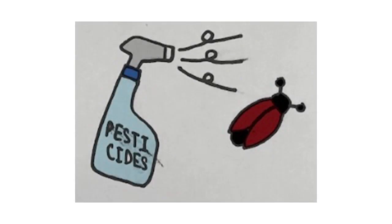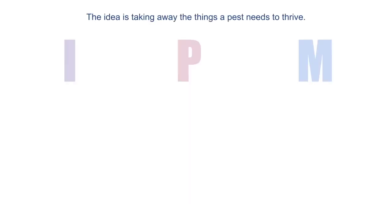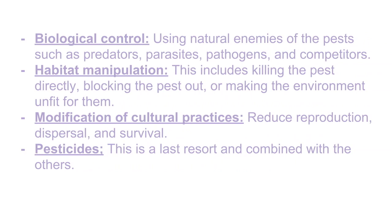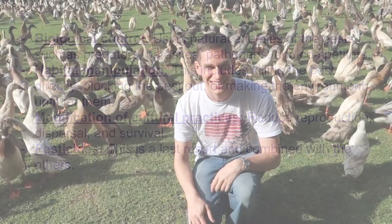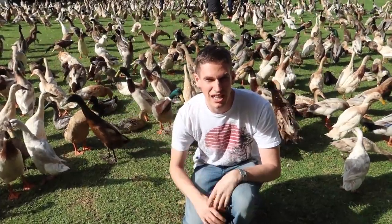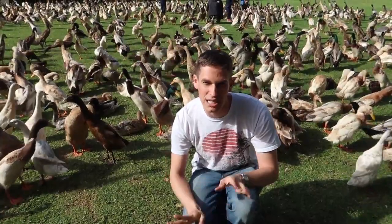Even after equipping your nursery with everything a plant might need to survive, there is still the need to prevent pests. Instead of using pesticides, there is a new and more effective strategy designed to yield long-term results called IPM, or integrated pest management. The idea is taking away the things a pest needs to thrive. This system uses many techniques including biological control — using natural enemies of the pest such as predators, parasites, pathogens, and competitors; habitat manipulation, which includes killing the pest directly, blocking the pest out, or making the environment unfit for them; modification of cultural practices to reduce reproduction, dispersal, and survival; and pesticides as a last resort, to be combined with the others. Ducks are one example of biological control — they go into vineyards and eat the pests so no pesticides are needed.